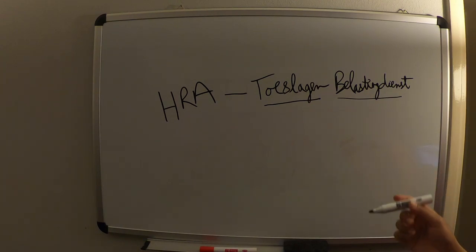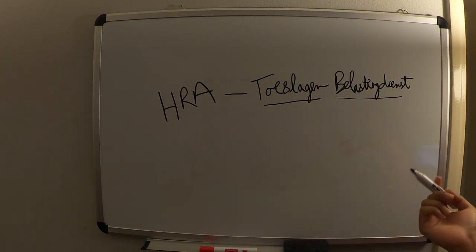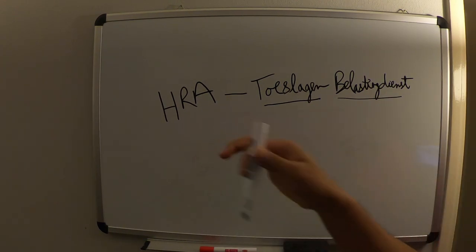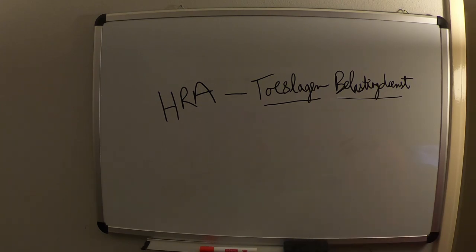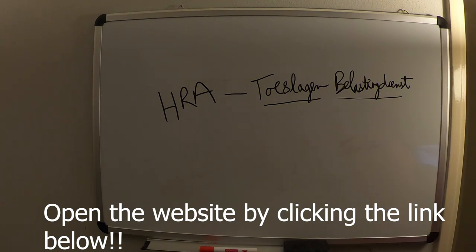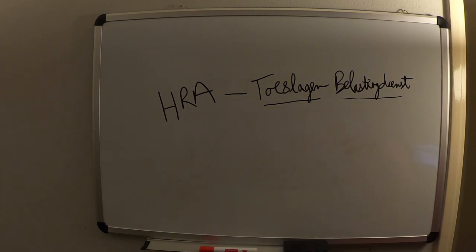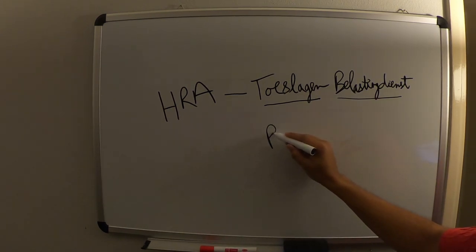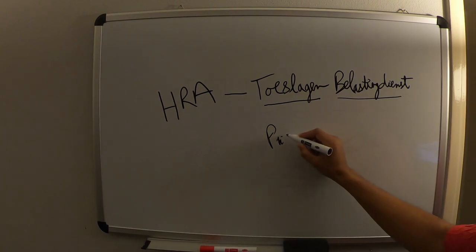They have a particular website — I'll leave the link below so you can access it. When you browse through the website, you can find different categories for house rent allowance. The minimum requirement to be eligible to apply for house rent allowance is that you are staying privately in your home.